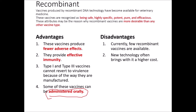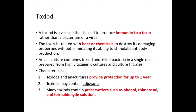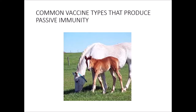A toxoid is a vaccine used to produce immunity to a toxin rather than to a bacterium or a virus. The toxin is treated with heat or chemicals to destroy its damaging properties without eliminating its ability to stimulate antibody production. An aniculture combines the toxoid and killed bacteria in a single dose prepared from a highly toxigenic culture and culture filtrate — we are culturing this bacteria to produce the toxin. Toxoids and aniculture provide protection for up to a year. They usually contain adjuvants, and they often contain preservatives such as phenol, thimerosal, and formaldehyde solution. The most prevalent toxoid we use is the tetanus toxoid used with horses.